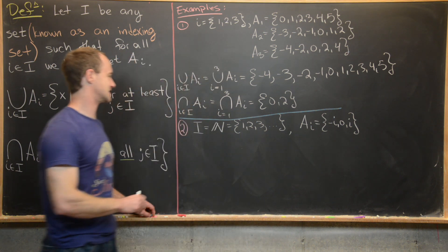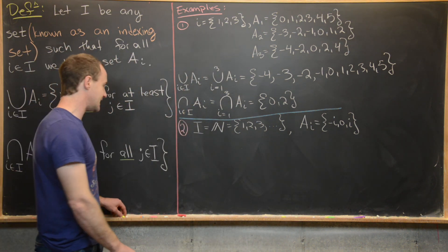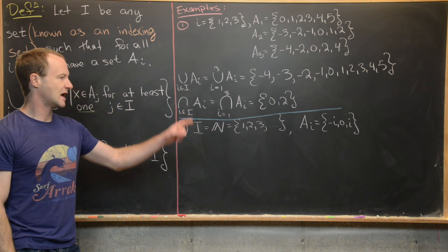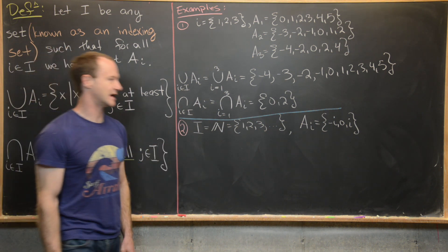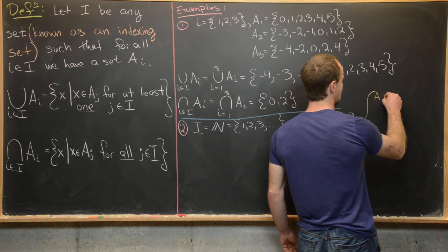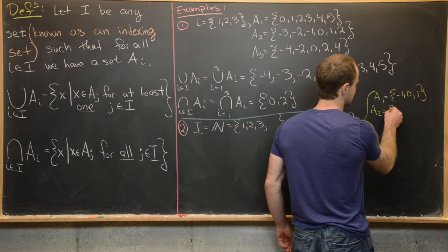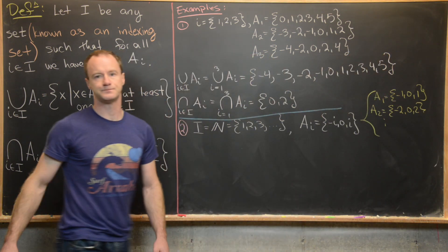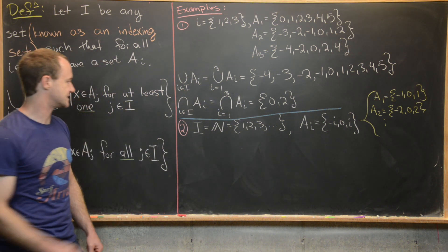Now let's move on to the next example. Here we've got an infinite indexing set — we're indexed by the natural numbers, 1, 2, 3, and so on. We're taking A_i to be the set {-i, 0, i}. For example, A_1 = {-1, 0, 1}, A_2 = {-2, 0, 2}, and now we can see the pattern.